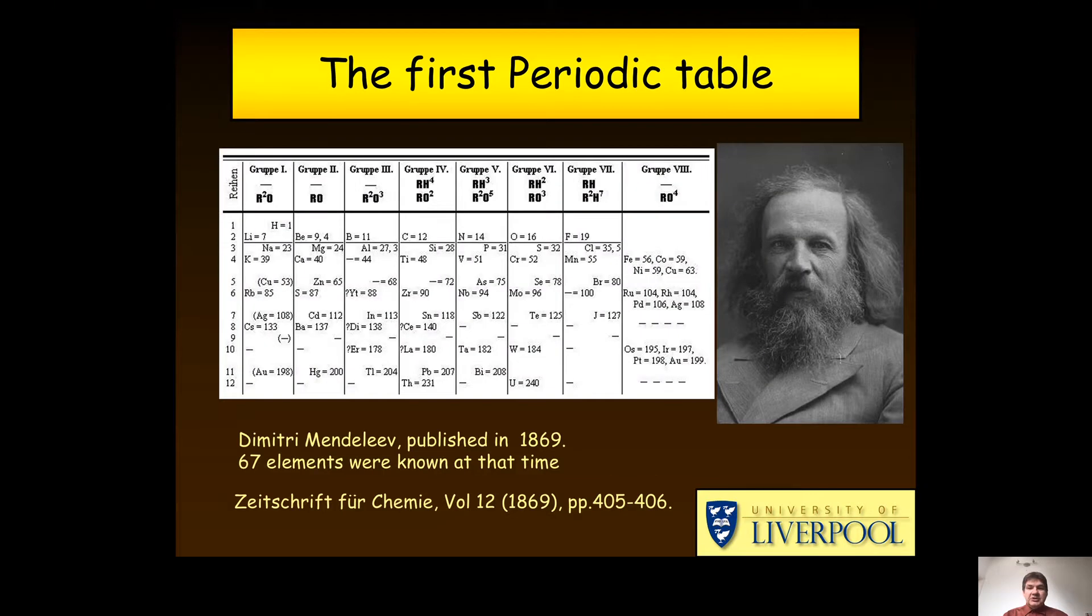What I want to show you is how we can use radioactivity to first create new and very heavy chemical elements in the laboratory using beta decay, and then how we can use alpha decay to identify what it is we have created in the first place. So here's the periodic table of elements going back to Dmitry Mendeleev in the late 19th century.